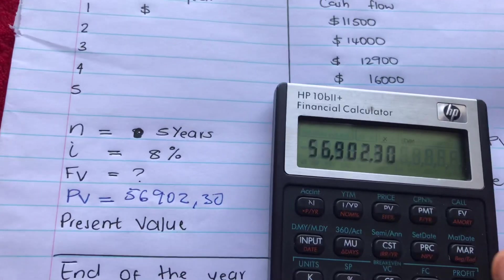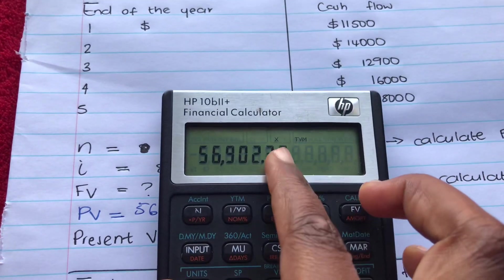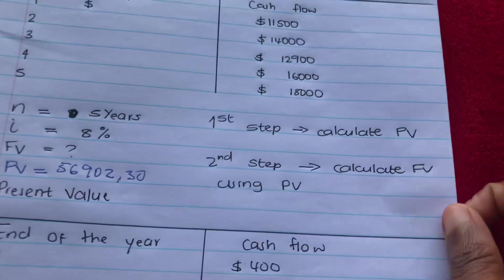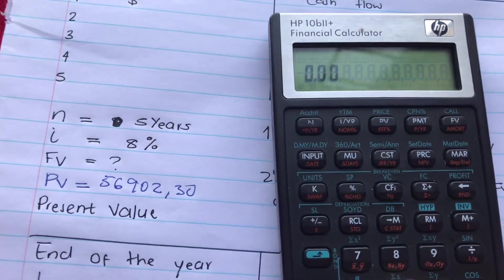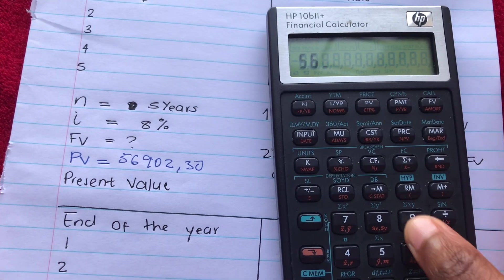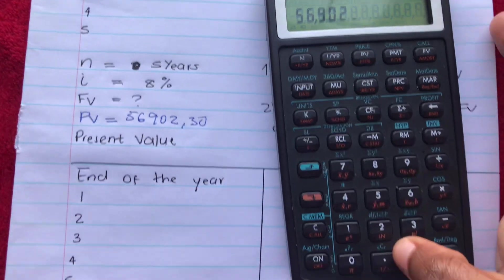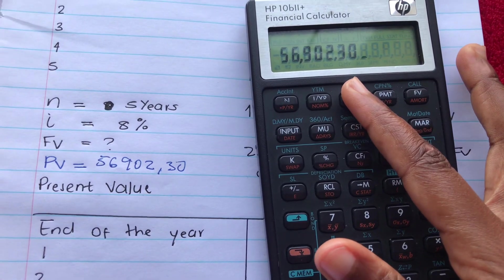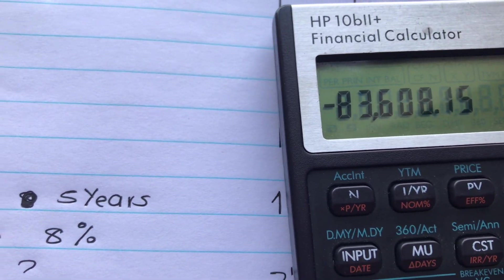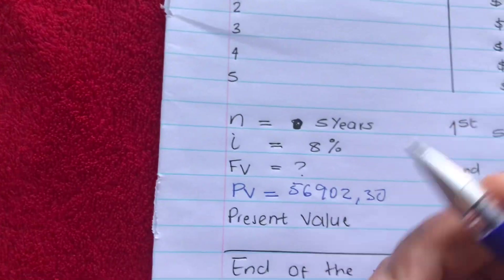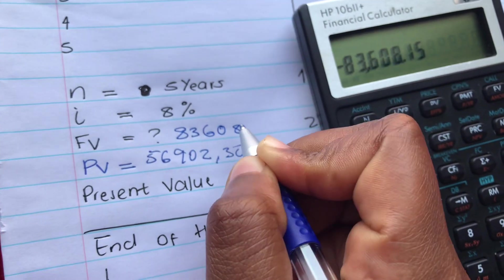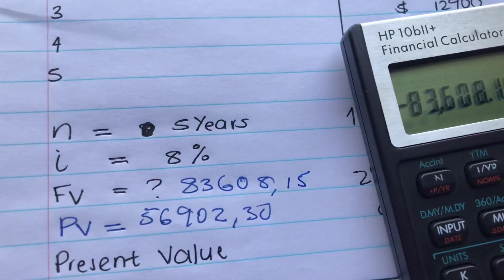Now we need to calculate the future value because that's where we are going. The second step is to calculate the future value using our net present value. We press orange shift then clear. We enter five as our N, eight as our percentage, and 56,902.30 as our present value. Our future value comes out to eighty-three thousand six hundred and eight point fifteen — that's our future value.